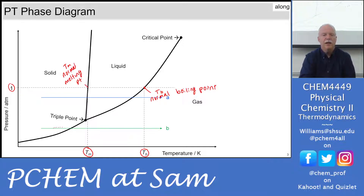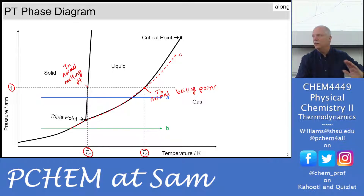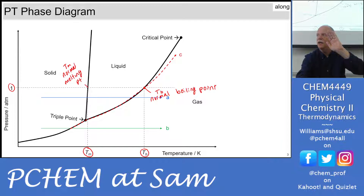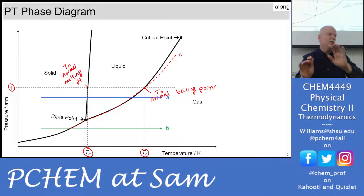Path B was all solid then sublimation — sitting at that sublimation temperature until it was all gas. Path C went up through the constant volume: solid and liquid in equilibrium, then we reached the triple point, continued heating until all solid was gone, then liquid and gas in equilibrium — boiling — and eventually diverged into the gaseous region. The A, B, and C paths are the same on both the PV and PT diagrams.